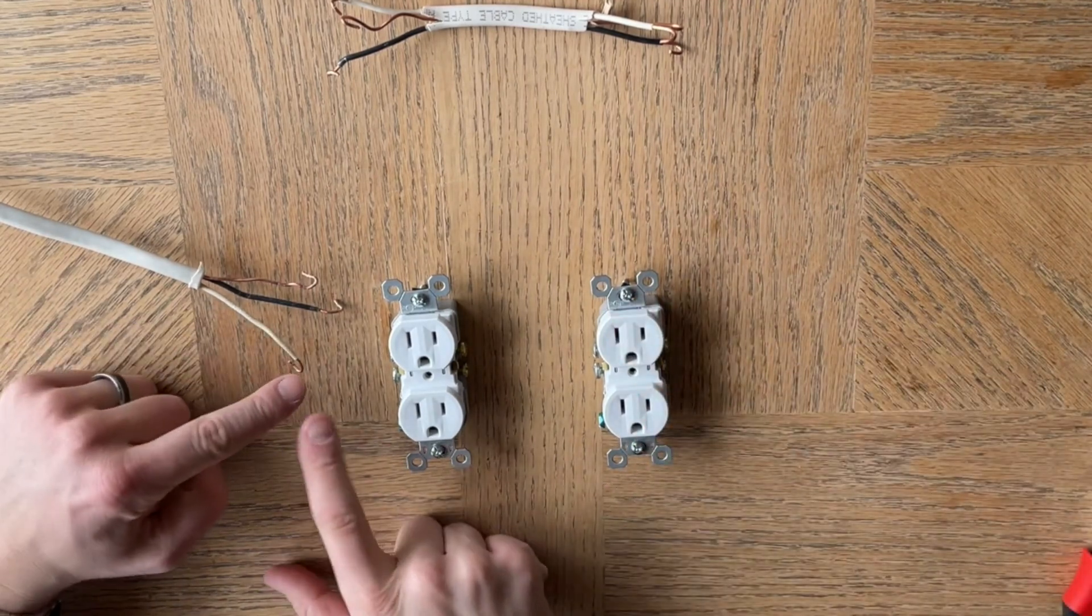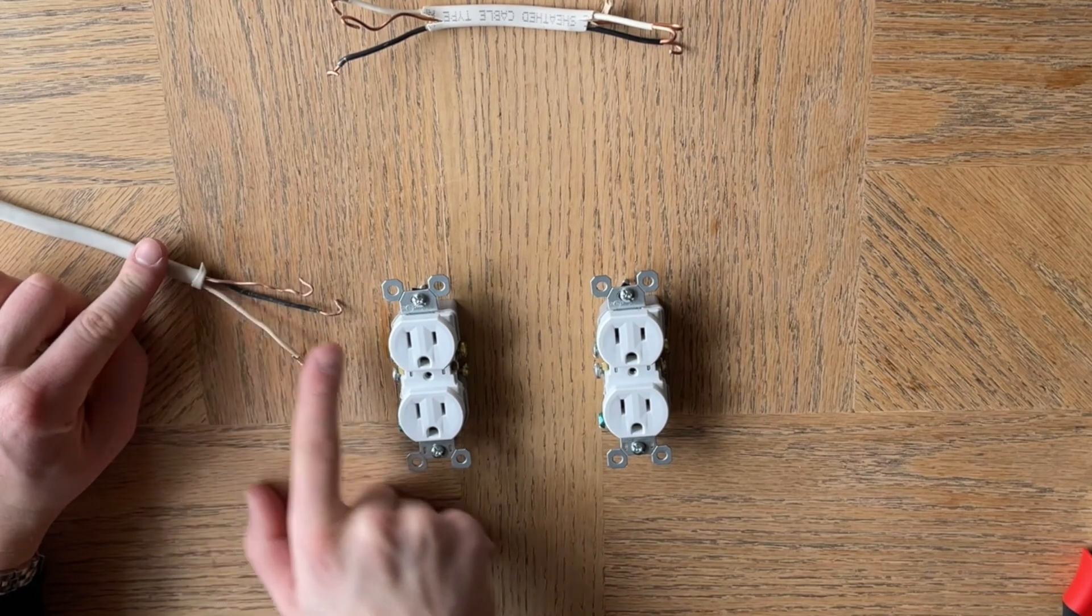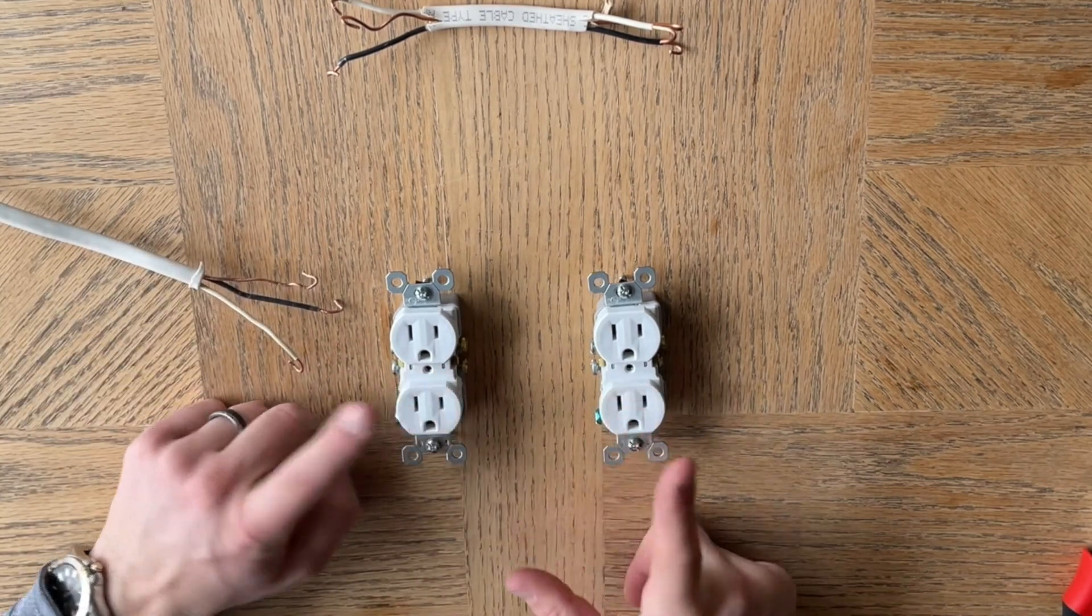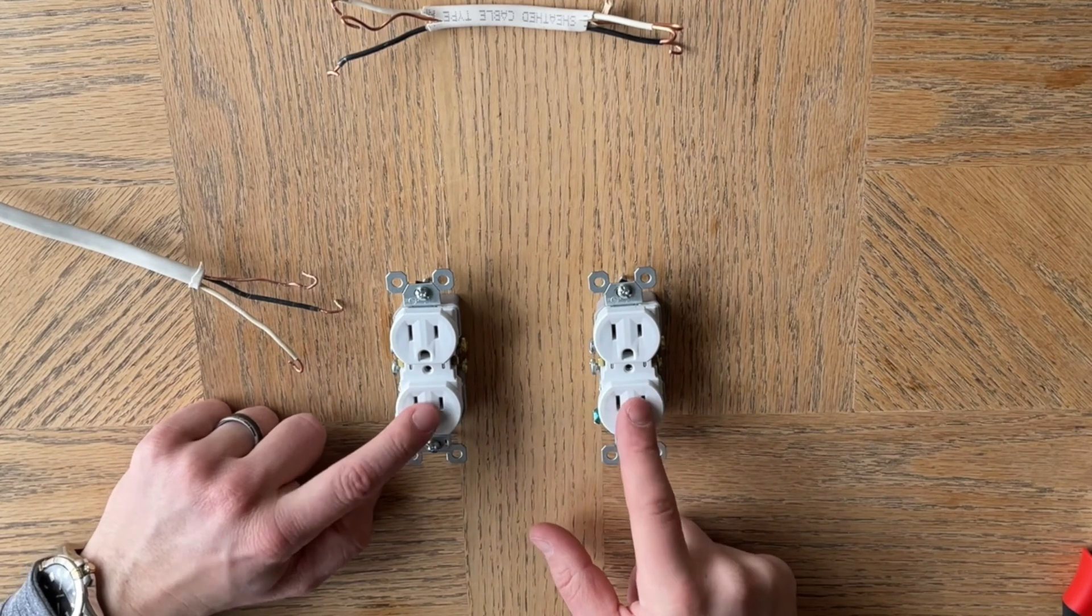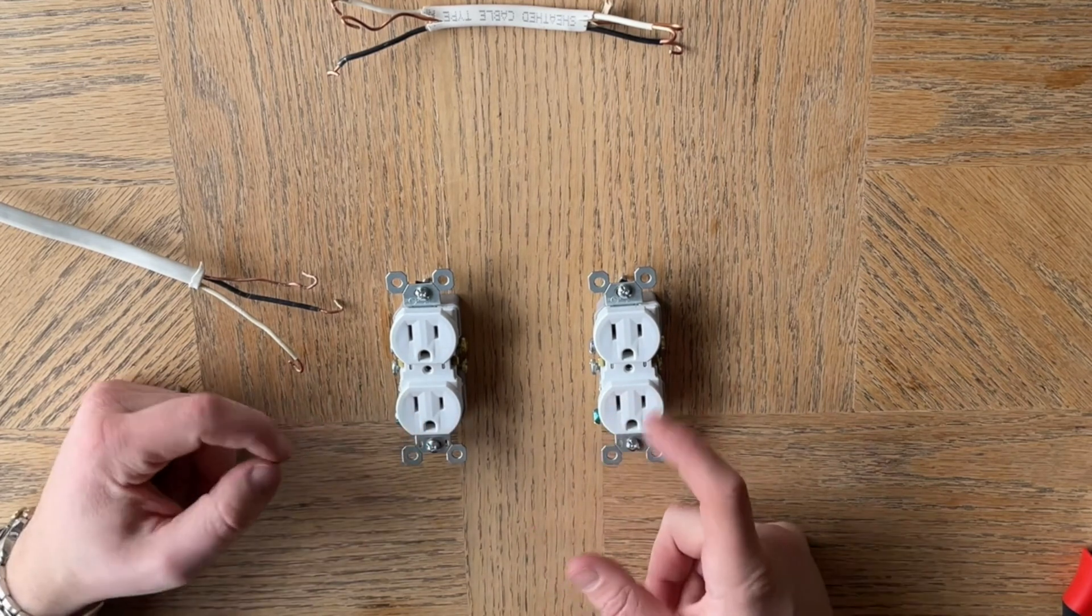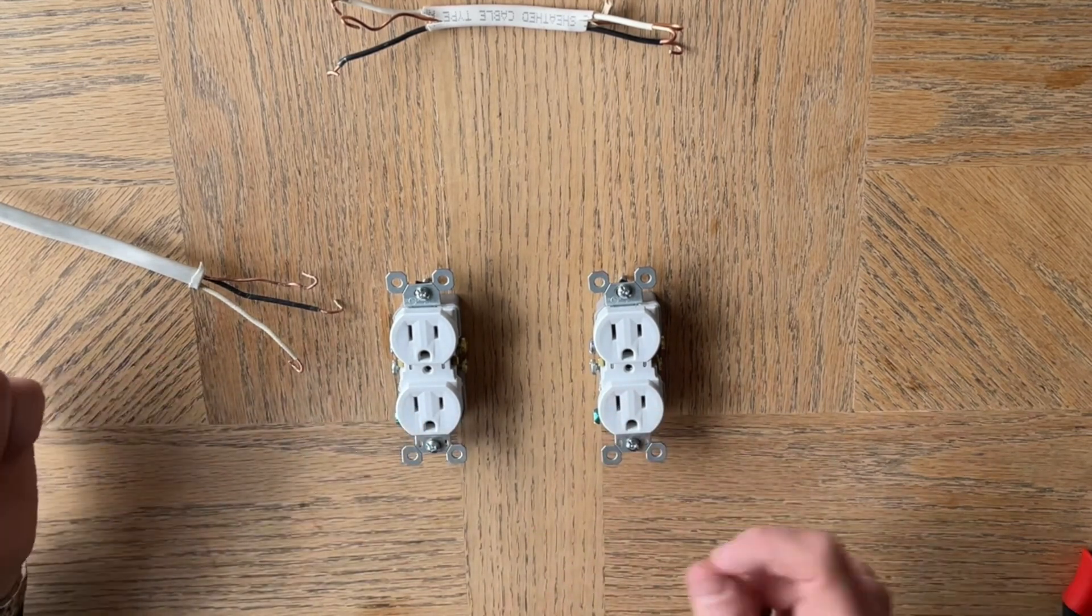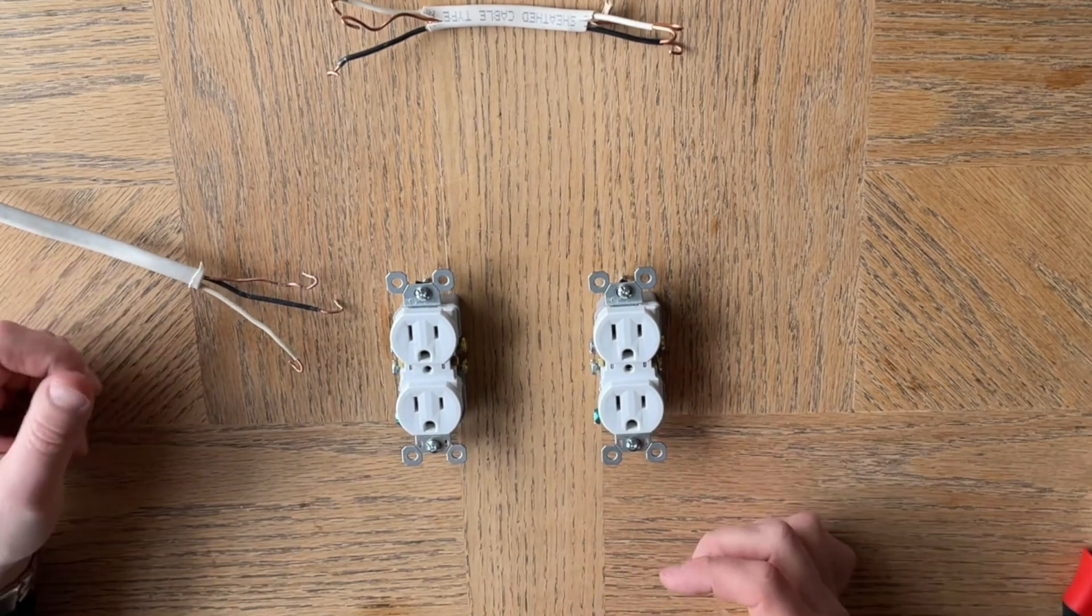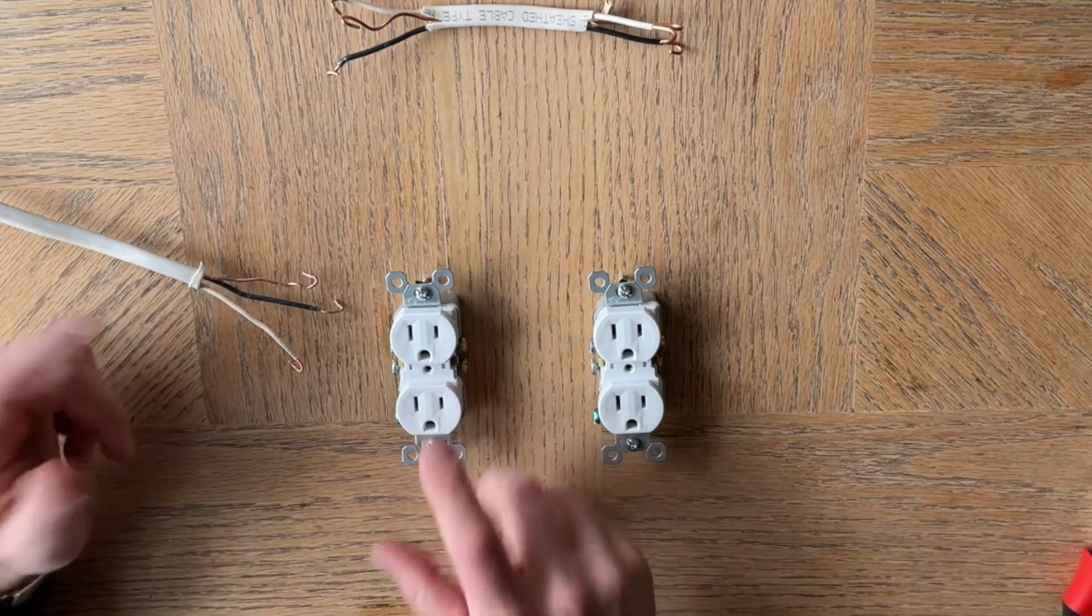This is daisy chaining where the wire is coming to one outlet and then from this outlet to another outlet. Code typically says daisy chaining is okay, parallel they don't like, but that is of course determined based upon where you live and your building code, so make sure you know what that is.